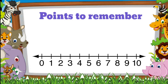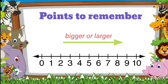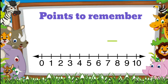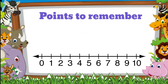In the number line method, if we move forward — that is to the right side — the number gets bigger or larger. And if you move backward — that is to the left side — the number gets smaller. Now let's learn how to do subtraction using a number line.